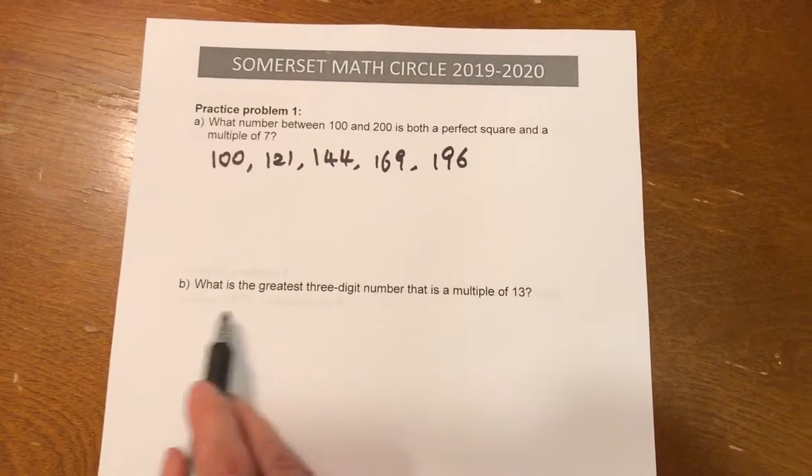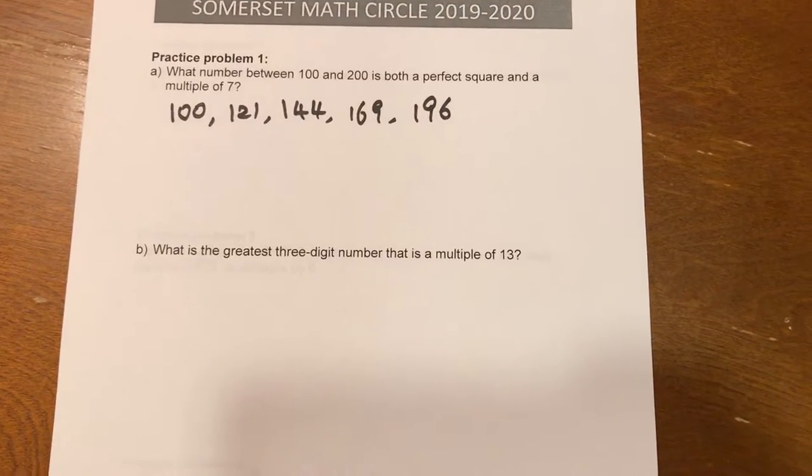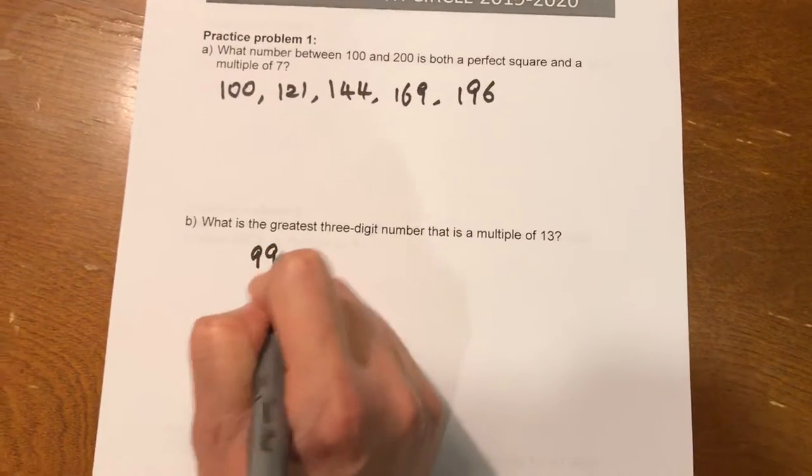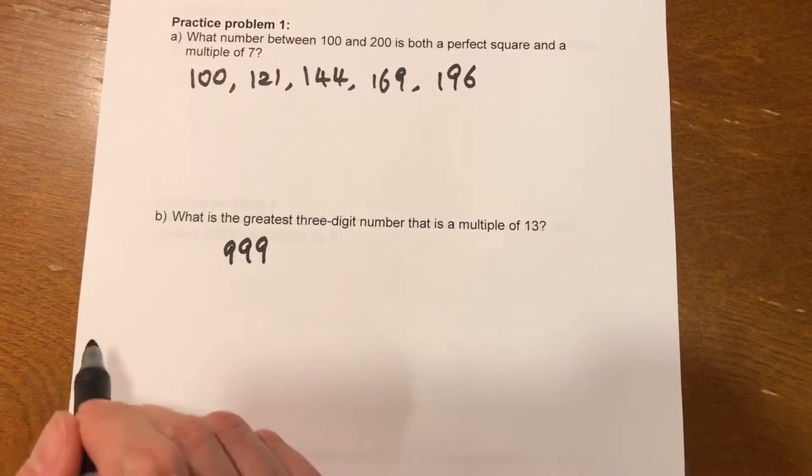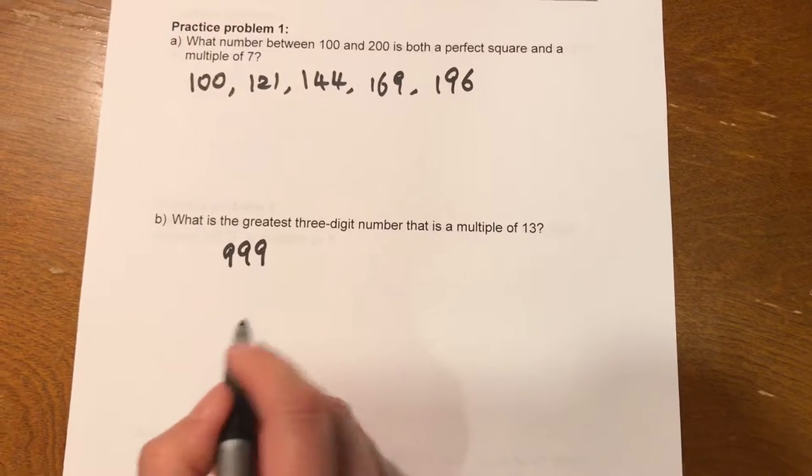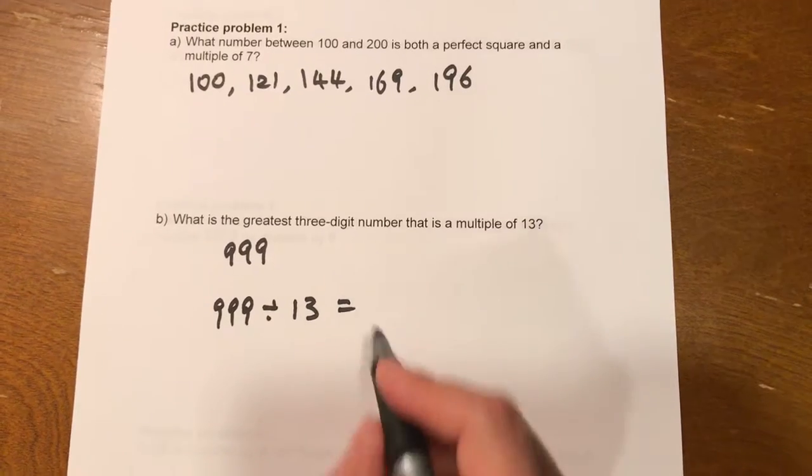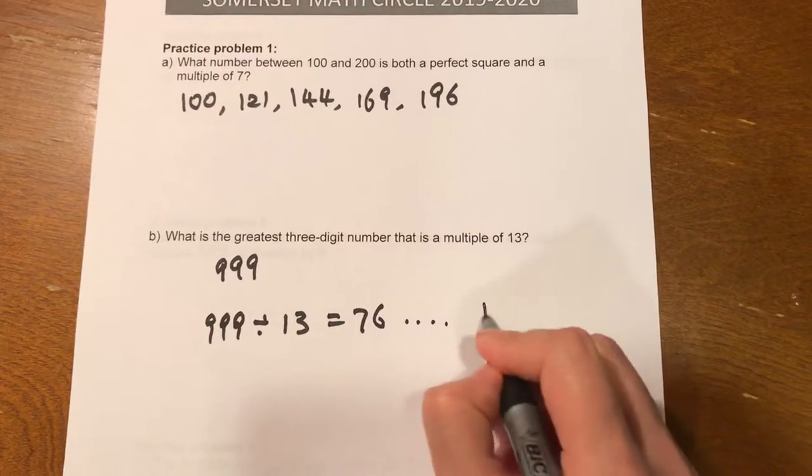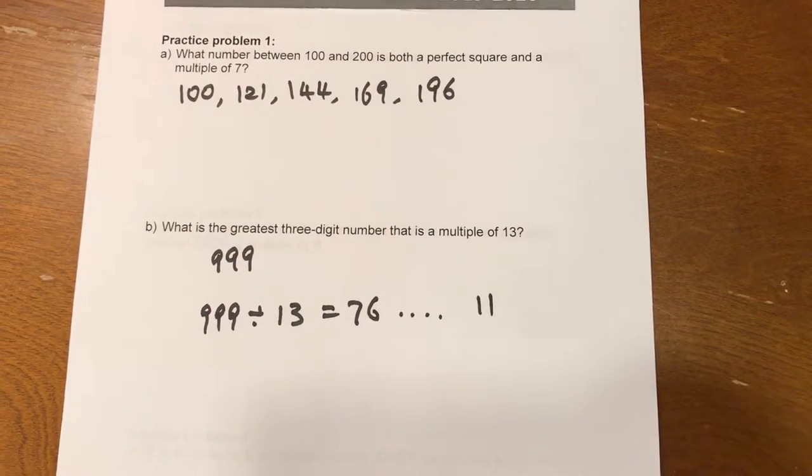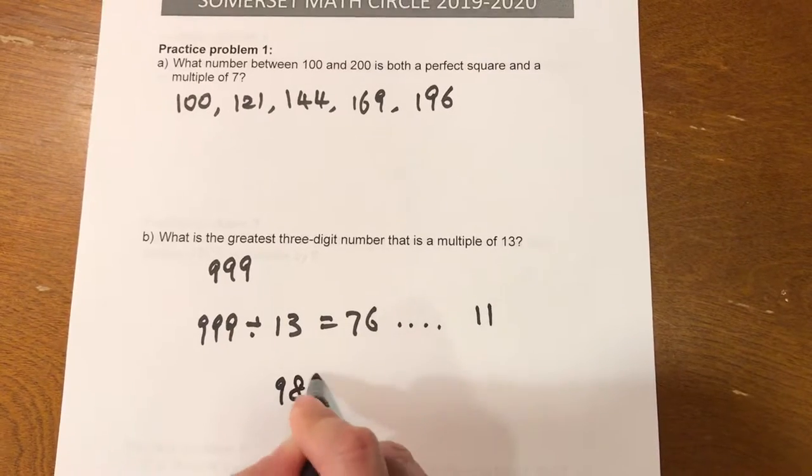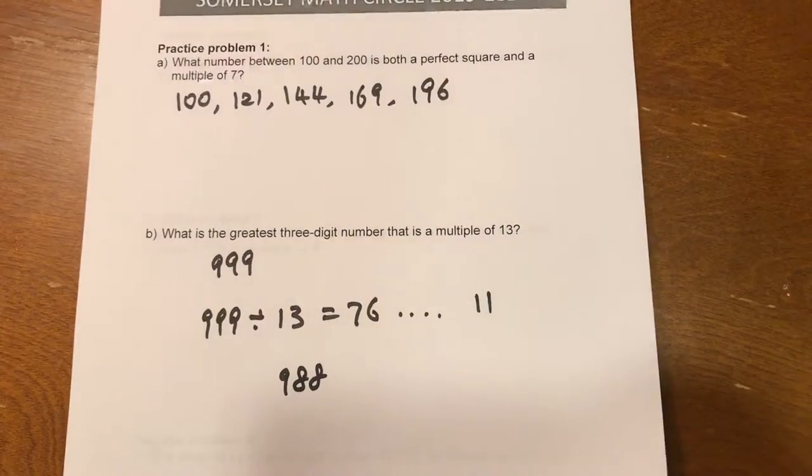Part B. What is the greatest 3-digit number that is a multiple of 13? What is the greatest 3-digit number? That is 999. But 999 cannot be divided by 13. So the students can figure out 999 divided by 13 has remainder 11. So we have to backtrack 11 to find a number that can be divided by 13, which is 988. So I think this problem, we quickly went through this, but a student can figure this out.